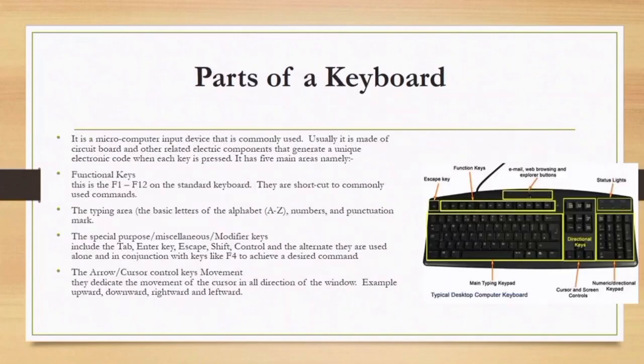Parts of a keyboard: a keyboard is a microcomputer input device that is commonly used. It is usually made up of a circuit board and other related electronic components that generate a unique electronic code when each key is pressed. It has five main areas.